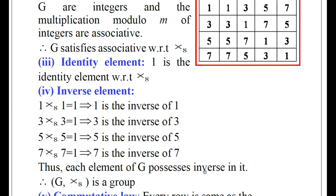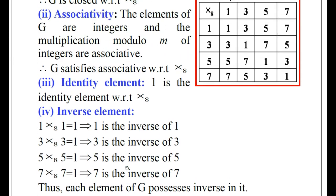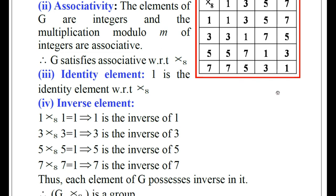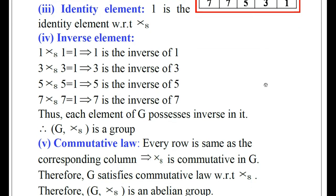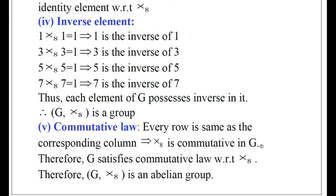Commutative law: first row 1,3,5,7 — first column 1,3,5,7. Second row 3,1,7,5 — second column 3,1,7,5. Third row 5,7,1,3 — third column 5,7,1,3. Fourth row 7,5,3,1 — fourth column 7,5,3,1. Every row is the same as the corresponding column. This implies multiplication modulo 8 is commutative in G. Therefore, G satisfies commutative law with respect to multiplication modulo 8. Thus, the algebraic structure G with multiplication modulo 8 is an abelian group.